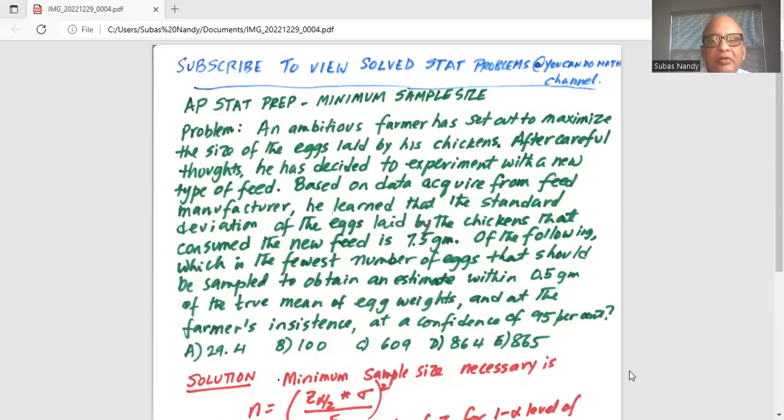An ambitious farmer has set out to maximize the size of the eggs laid by his chickens. After careful thought, he has decided to experiment with a new type of feed. Based on data acquired from feed manufacturer, he learned that the standard deviation of the eggs laid by the chickens that consume the new feed is 7.5 grams.